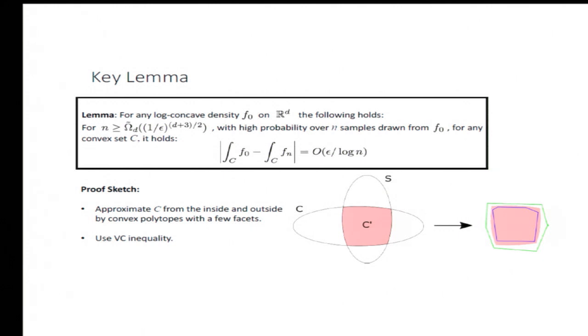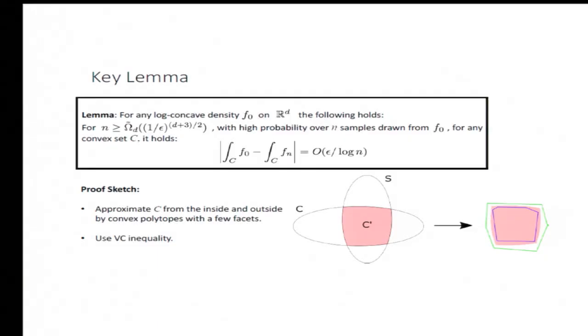The thing we actually need is that f-zero and f-n are close on C itself. This reduces to proving that the volume of the difference between the inner and outer approximation is small. This is not true if C can have infinite volume, since the approximation error is multiplicative. The easy way out is to intersect C with a set S that contains essentially all the samples. We know by concentration that S won't have too much volume, because log-concave distributions have fast-decaying tails. To get the right lemma with the exact sample size stated, you need something more complicated, but that's the core idea.